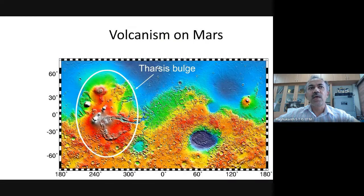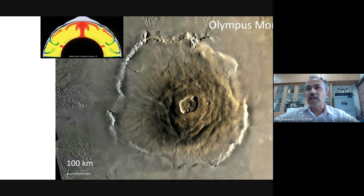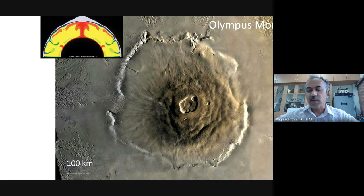There is also proof of volcanism on Mars — active volcanoes existed, forming a bulge. Olympus Mons is almost the tallest mountain in the entire solar system — some 27 kilometers in height — a huge mountain formed by volcanic activity. This is a very dominant geomorphological feature on Mars.